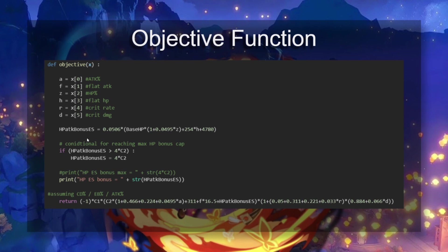Here, we're looking at the HP attack bonus elemental skill increase. This is Hu Tao's level six elemental skill attack increase multiplier, 5.06%. This is the base HP. This is the HP substat rolls. This is the flat HP rolls. This is the flat HP from the flower. This is a conditional that's just checking if we've actually hit the max HP bonus cap, which is four times the base attack or 400% of the base attack. Base attack is C2.